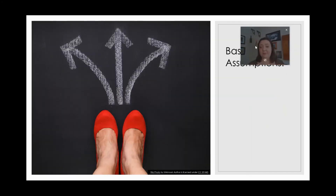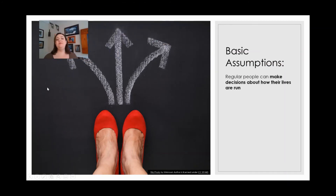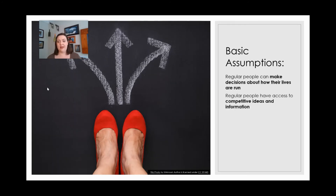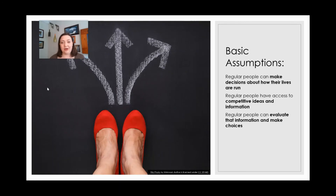But there are some basic assumptions to democracies that I think are really important for all of us to wrap our heads around. In a democracy, regular people have the ability to make decisions about how their lives are run. An essential concept here is that there is a faith in the ability of everyone to make decisions — that is a critical element to a substantive democracy. A procedural democracy might allow only some people to go and vote in an election, but here the assumption is that everybody gets to vote, everybody gets to make decisions about how their lives are run. Regular people have access to competitive ideas and information, and additionally they're capable of evaluating that information and making choices based upon it.